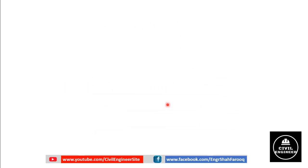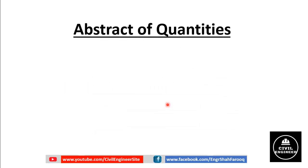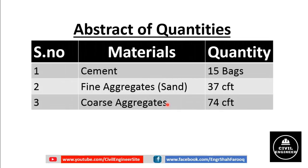Now we have determined the quantity of each material. The extract of quantities: cement required is 15 bags; fine aggregate or sand required is 37 cubic feet (or approximately 50 cubic feet); and coarse aggregate or crushed stone required is 74 cubic feet (or approximately 100 cubic feet).